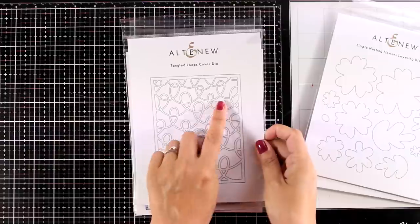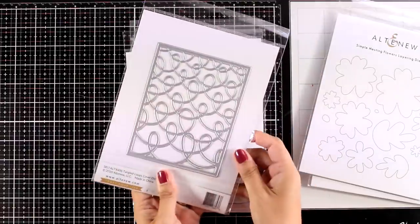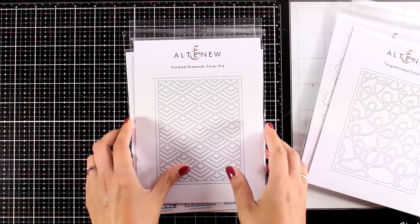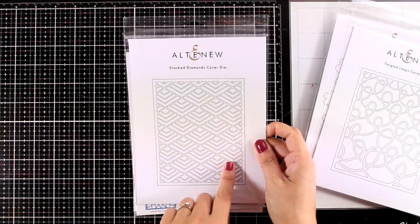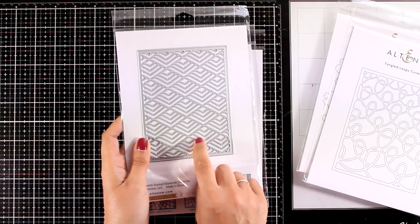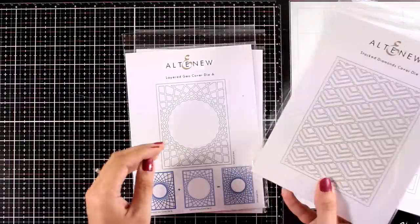And now let's take a look at some of their new cover dies. This is the tangled loops cover die. It is four and a quarter by five and a half so they are all going to cover up completely the card front. This is another favorite from this release. It is really versatile. That design is perfect for pretty much any background.